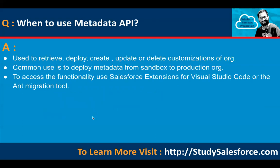When to use Metadata API: it is used to retrieve, deploy, create, update, or delete customizations of an org. A common use is to deploy metadata from a sandbox to a production org. To access the functionality, use Salesforce Extensions for Visual Studio Code or the Ant Migration Tool.